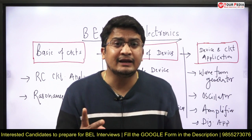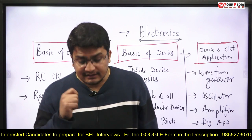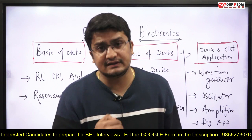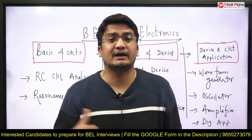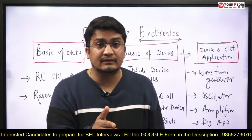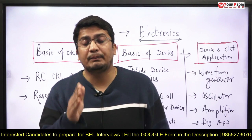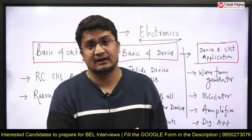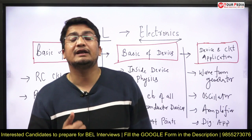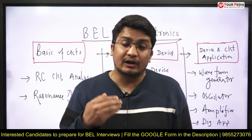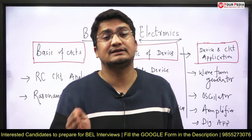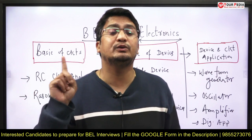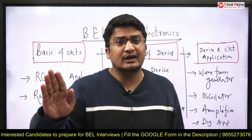The second important thing is resonance. Resonance plays a very important role in IC designing and circuit designing. Series resonance, parallel resonance — what do they practically mean? What are the important parameters associated with resonance in the circuit, and how can you utilize the resonant RLC circuit — series or parallel — in any particular required application? That is the second domain to cover from the basic circuit point of view. Don't go into detail beyond these two topics — they are more than enough.